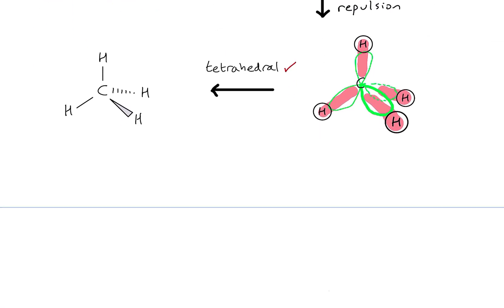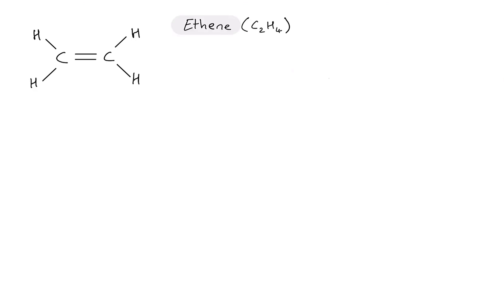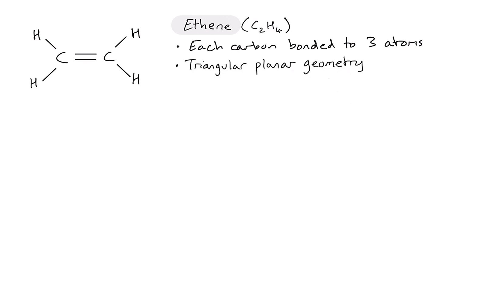Let's take a look at a second example: ethene, where we now have a double bond between the two carbons. Analyzing this substance experimentally, each carbon must be bonded to three atoms. Around each carbon there is a triangular planar geometry, and from the Lewis diagram we can see that we need three sigma bonds on each atom and one pi bond formed between them.